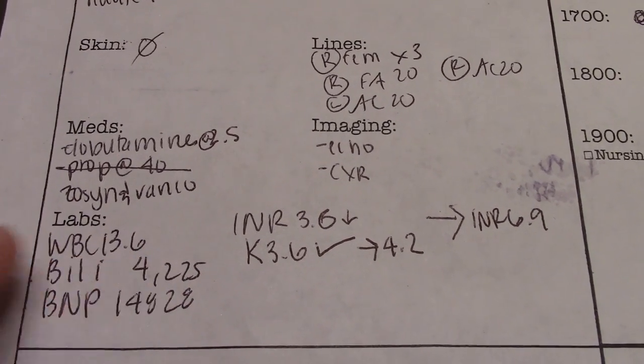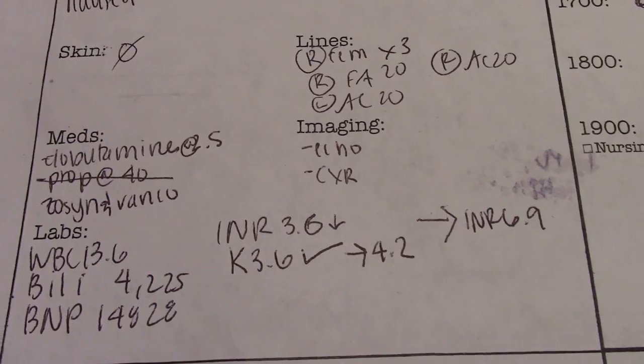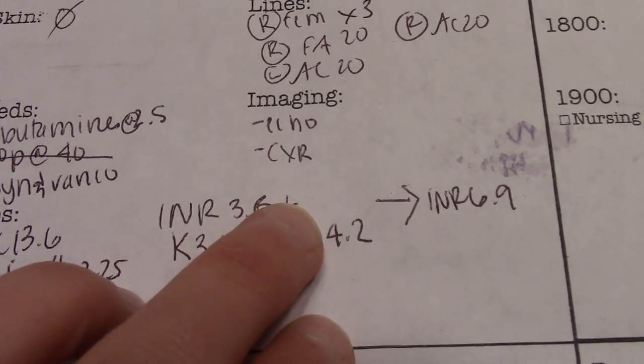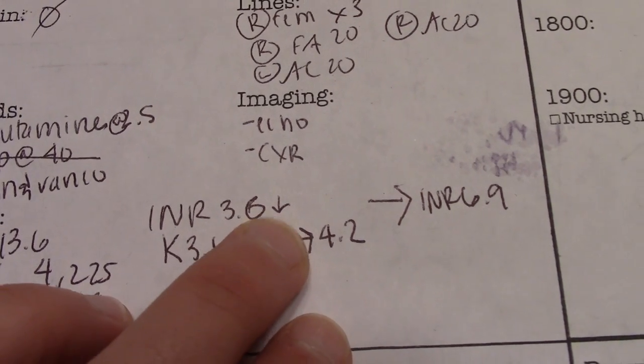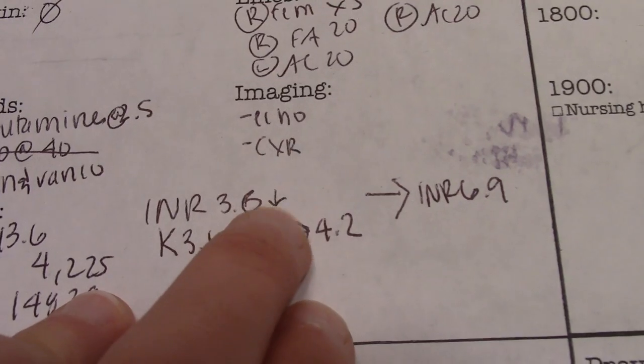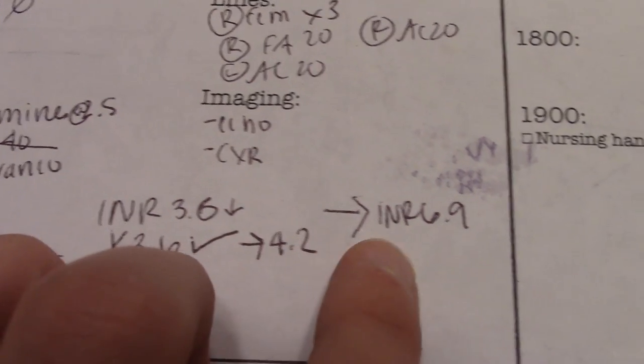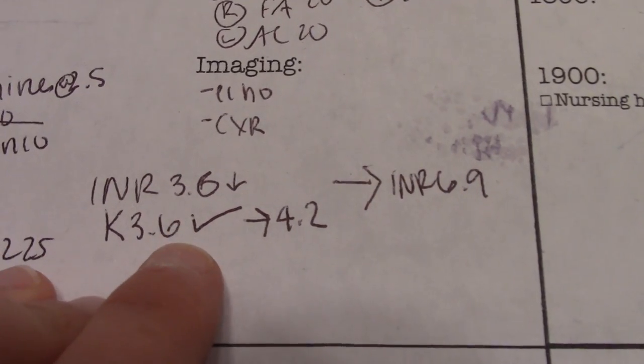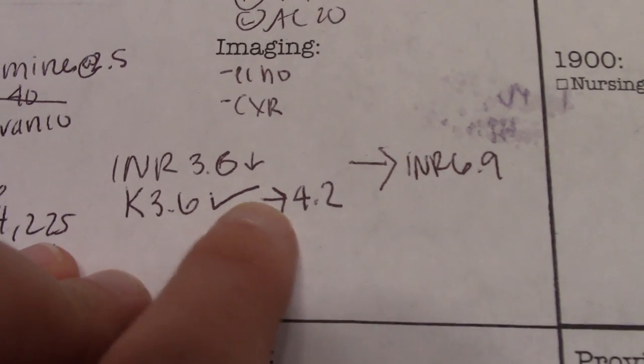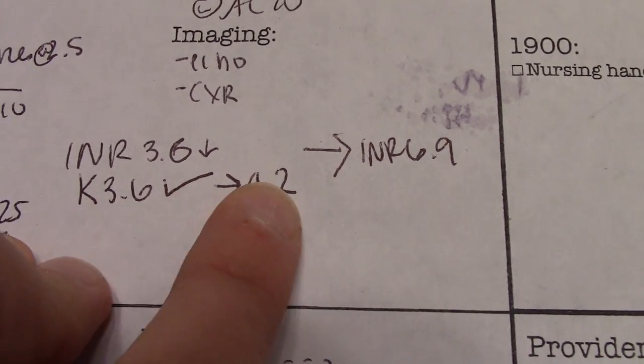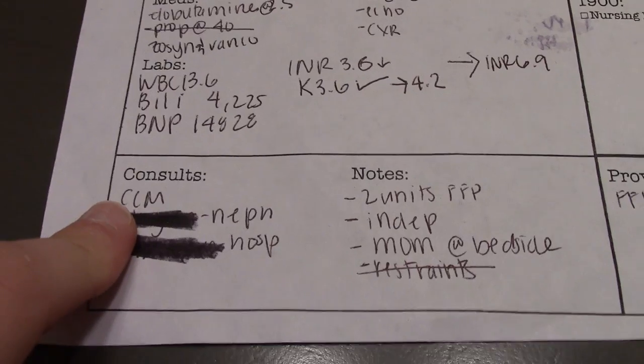I just write down the daily labs or any new labs. I usually put a down arrow if it's downtrending or an up arrow if it's trending upwards. The INR was 3.6, which is down, but then later in that shift it was up to 6.9, so I drew an arrow to show that. The potassium was a little low, so I put a check mark when it's been replaced. Then we did a redraw and it was 4.2.